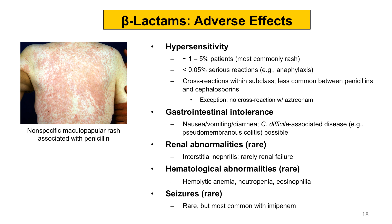Renal abnormalities are rare and might include interstitial nephritis and very rarely renal failure. Hematological abnormalities are also rare, including hemolytic anemia, neutropenia, and eosinophilia. Finally, seizures are rare, but we do see them with the carbapenem class, specifically with imipenem. The other listed carbapenems are less commonly associated with seizures.